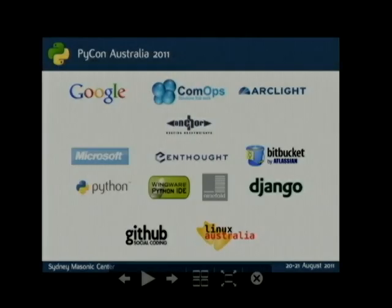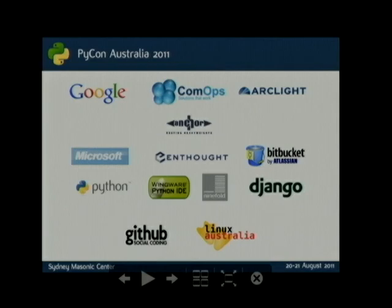The weekend has been exceptionally inspirational. Thank you to Richard and all the others who put in vast amounts of work. We also have to thank our sponsors — without their help it would have been a lot more expensive. Gold sponsors: Google, ComOps, and Arclight. Anchor for sponsoring the video. Silver sponsors: Microsoft, Enthought, Bitbucket, Python Software Foundation, Wingware, Ninefold, Django Software Foundation, GitHub for sponsoring the internet, and Linux Australia for underwriting the whole thing and paying for our insurance.